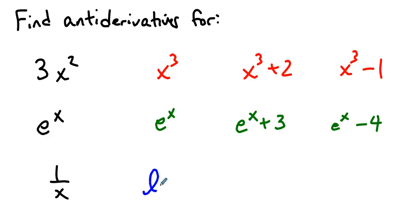And you might have said natural log x here. You might have said natural log x plus 2021 here. You might have said natural log x minus 2020 over here. Any of those are anti-derivatives of 1 over x because the derivative of any of those is 1 over x.